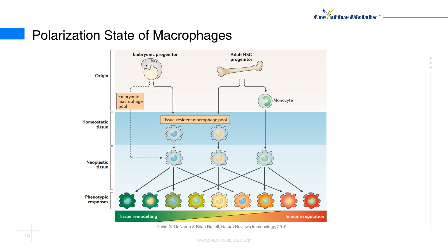Tissue macrophages are derived from embryonic or adult hematopoietic stem cell progenitor cells under homeostatic conditions, with the relative contribution of these populations varying by tissue. Monocyte-derived cells also contribute to the macrophage population in some tissues but are mostly associated with a response to inflammatory conditions, including cancer. The combination of their developmental origin and tissue of residence is thought to fine-tune the eventual response of a macrophage to polarizing stimuli. These distinctions in both macrophage phenotypes and underlying origin-based epigenetic patterns are depicted by the colored gradients.